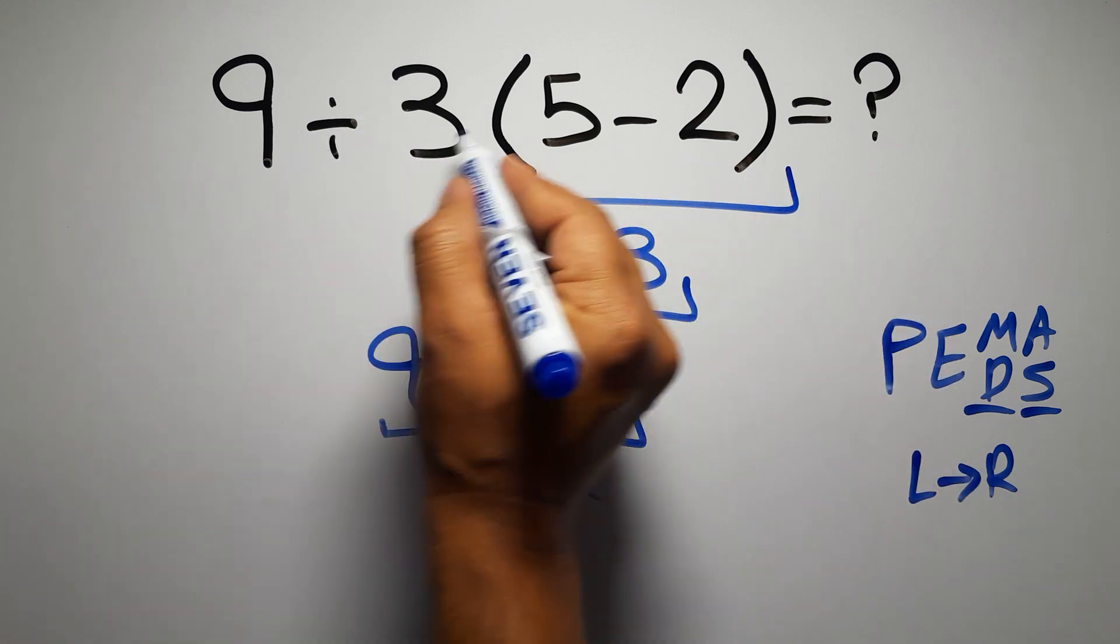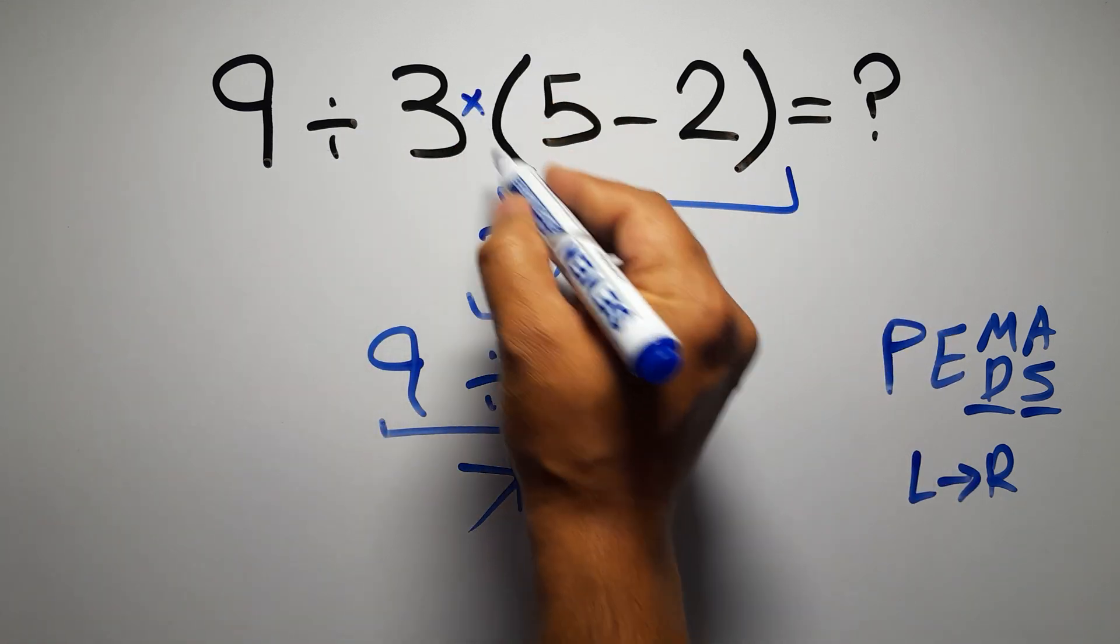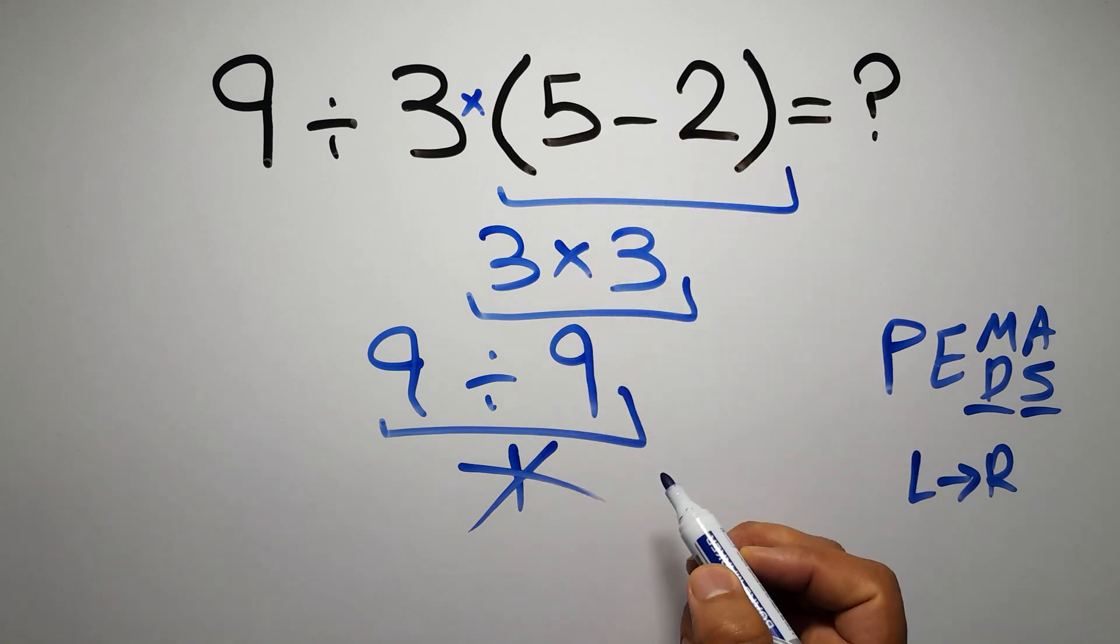In this expression, we have one division, one multiplication, and one parenthesis. Inside this parenthesis, we have one subtraction.